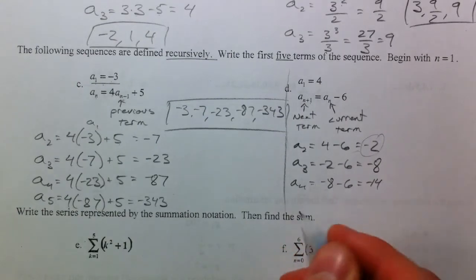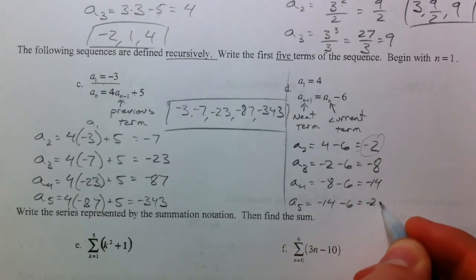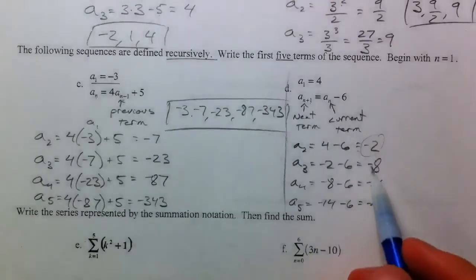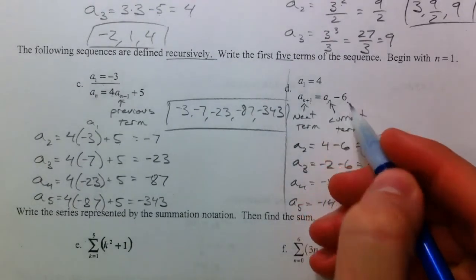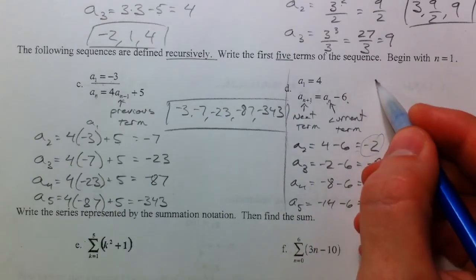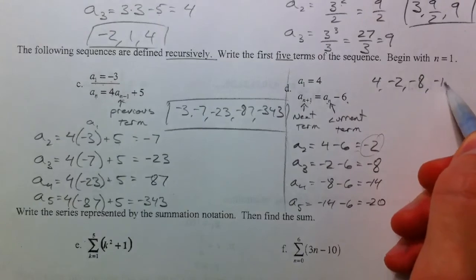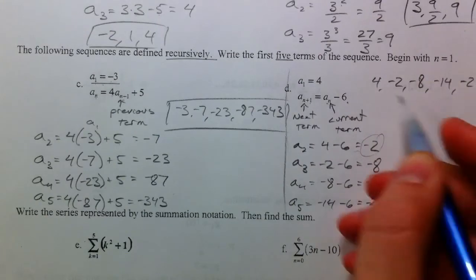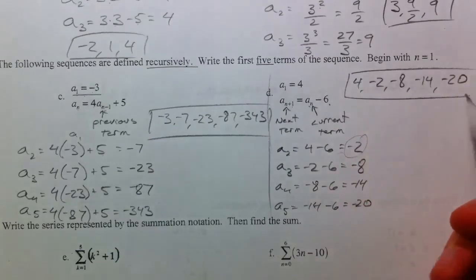A sub 5, we're going to use negative 14 minus 6, negative 20. All of these use the prior term, and then subtract 6. So, our sequence 4, negative 2, negative 8, negative 14, and negative 20. That is what we call an arithmetic sequence, because they're subtracting 6 every single time.